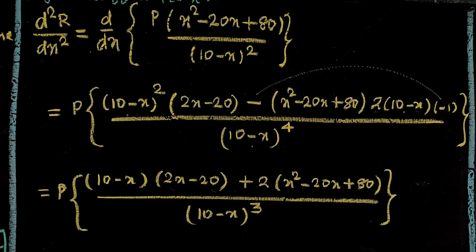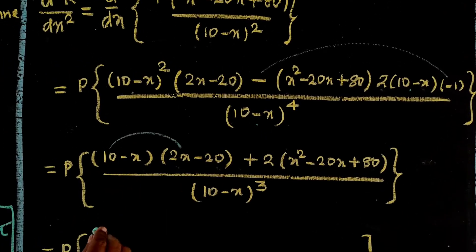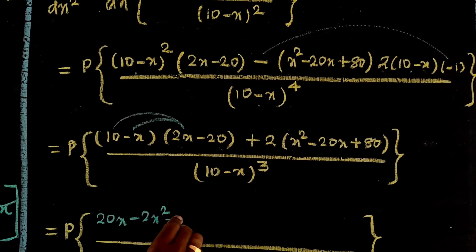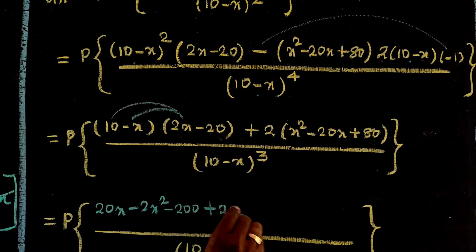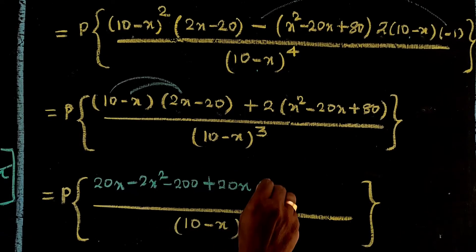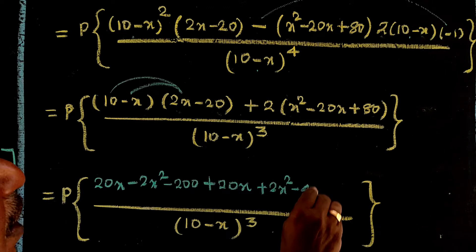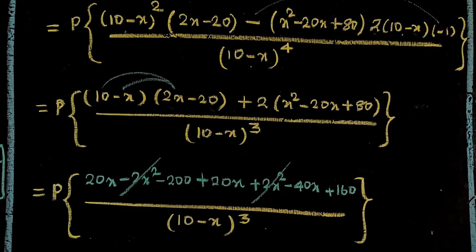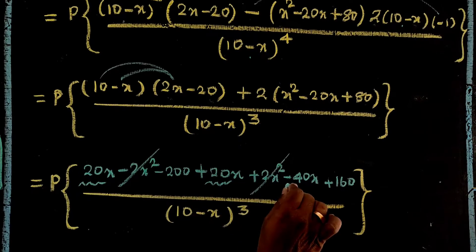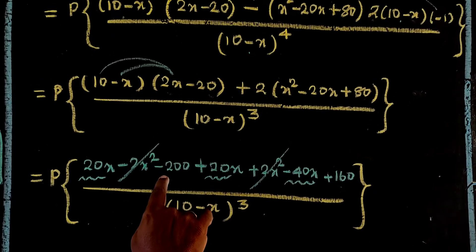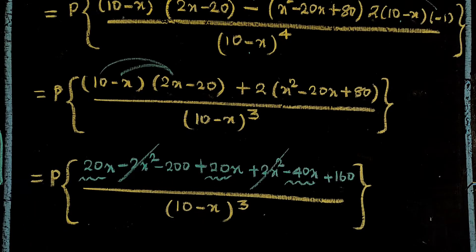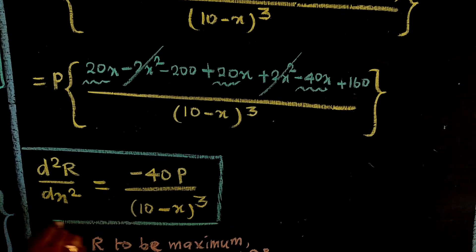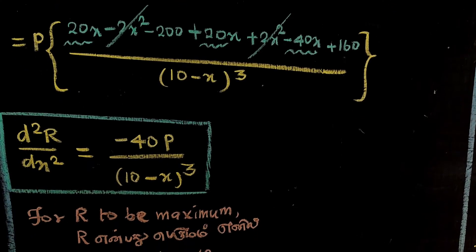Expanding the numerator: (10 minus x)(2x minus 20) minus 2(x² minus 20x plus 80). After expanding: 2x² cancels, 40x terms cancel, leaving 160 minus 200 = minus 40. Therefore, d²R/dx² equals minus 40p divided by (10 minus x) cubed.